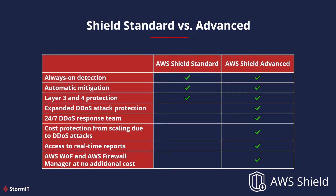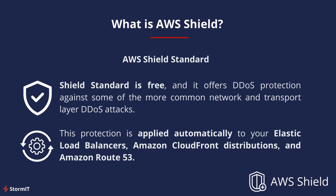Let's make a comparison of Shield Standard and Advanced. Shield Standard includes always-on detection and automatic mitigation of DDoS attacks on layers 3 and 4. Shield Advanced includes additional functions that help you not only protect against DDoS attacks but also monitor them. It also includes AWS WAF and AWS Firewall Manager at no additional cost. AWS Shield Standard is a free service offering DDoS protection against common network and transport layer attacks.